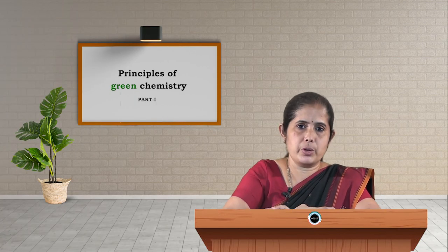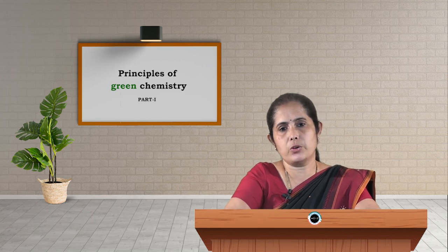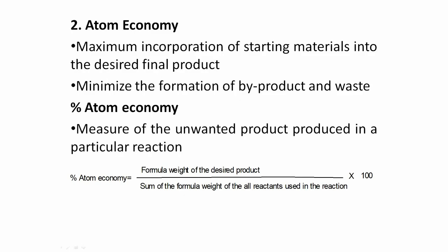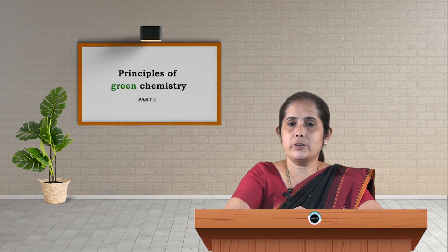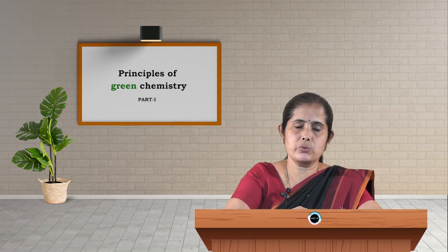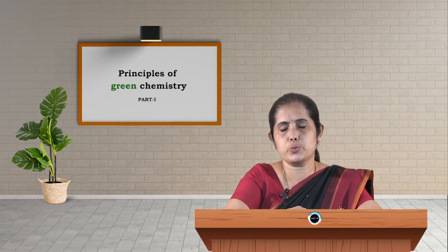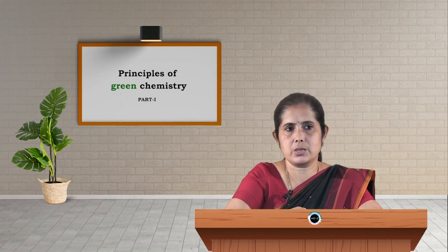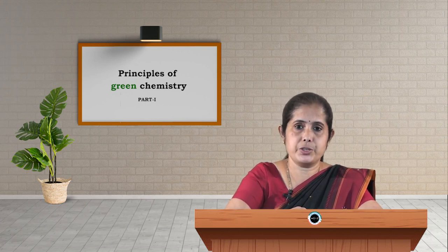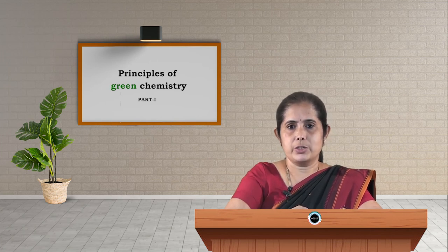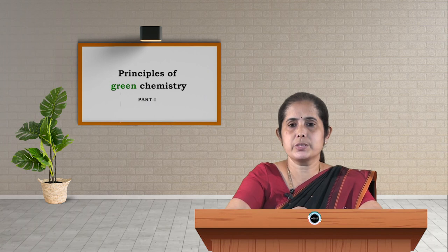The second important principle of green chemistry is atom economy. When we develop a chemical process, we always expect 100% yield and zero waste or byproduct formation. Once a byproduct is formed, it cannot be used as a product, and any waste formed has to be dumped and treated, which is a Hercules task. So how can we achieve maximum yield? That is measured in terms of percent atom economy.